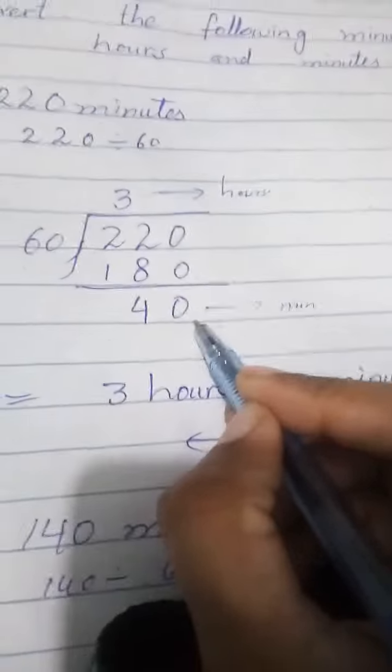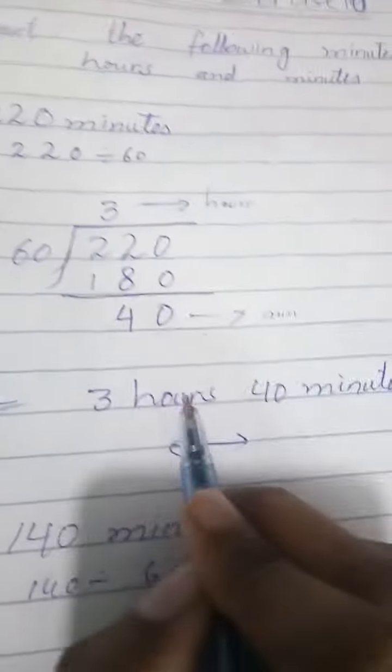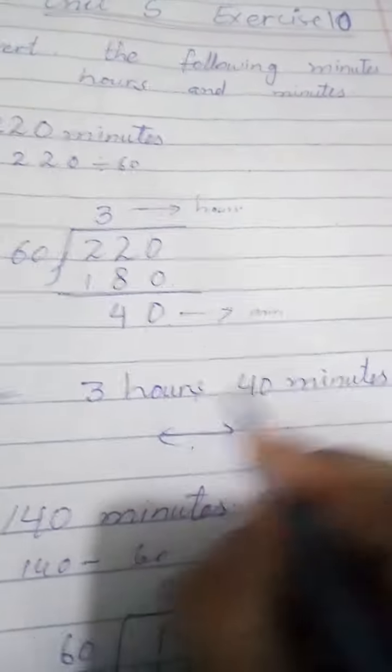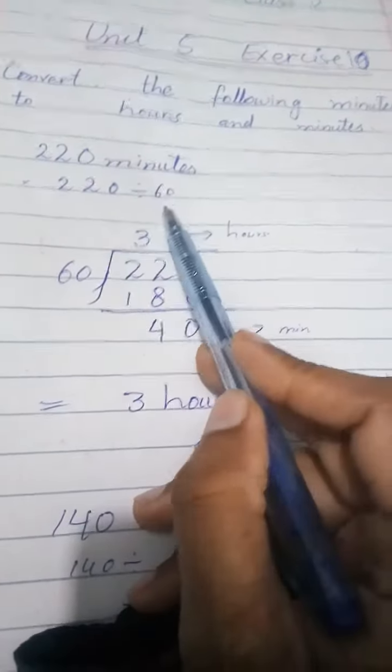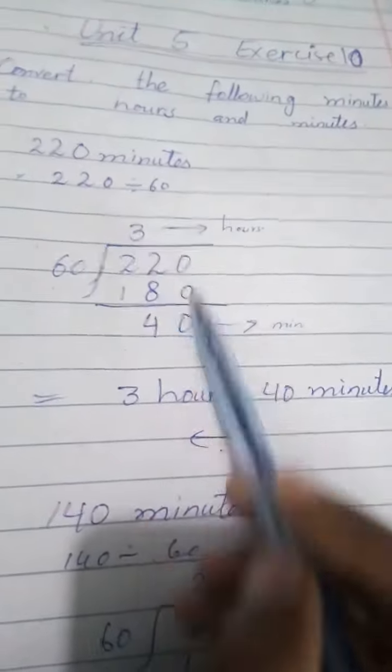The minutes that are less than 60 are 40, so write 3 hours and 40 minutes as the answer. As you see, when we divide by 60, we get hours and minutes. Now the second one is 120 minutes.